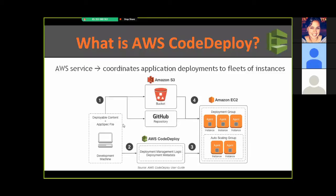For the third question — how to deploy — another concept called deployment configuration comes into play. This is essentially a constraint that determines how deployment progresses through the instances in the deployment group. Once defined, which can be done from the Amazon console or CLI, the next step is to trigger the deployment. At that point, depending on the deployment configuration, the agent fetches the revision from S3 or GitHub and, based on the app spec file, copies the deployable content and runs the deployment scripts.